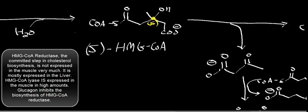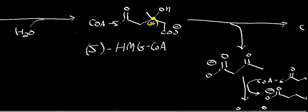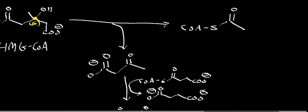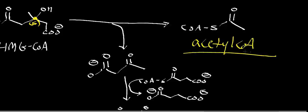When HMG-CoA builds up and glucagon is present — in other words, your blood sugar is low — HMG-CoA is going to react with an enzyme called hydroxymethylglutaryl-CoA lyase. The lyase gives you two products: acetyl-CoA and acetoacetate.